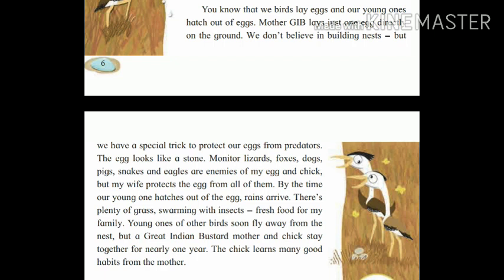They protect their eggs by a special trick: the egg looks like a stone, so monitor lizards, foxes, dogs, pigs, snakes, and eagles — these are their enemies — don't easily recognize the eggs. They are easily ignored by the predators because the egg looks like a stone.